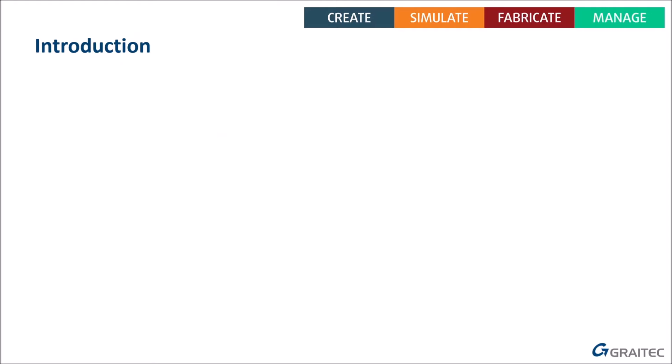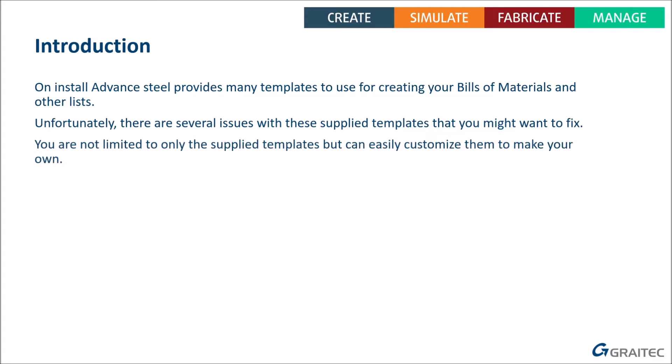This webinar focuses on how to adjust your templates for bills of materials or parts lists in Advanced Steel. When you install Advanced Steel you get quite a lot of templates provided. Many customers are perfectly happy with those and never need to change them. But there are a few issues with the supplied templates you might want to fix, and you're not limited to those — you can make your own and customize them quite easily.